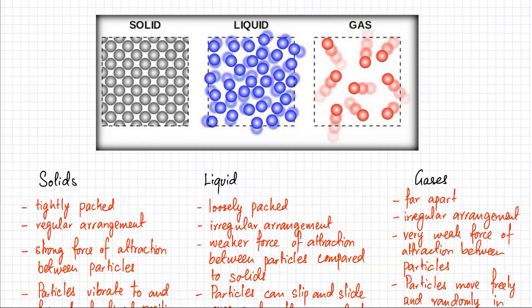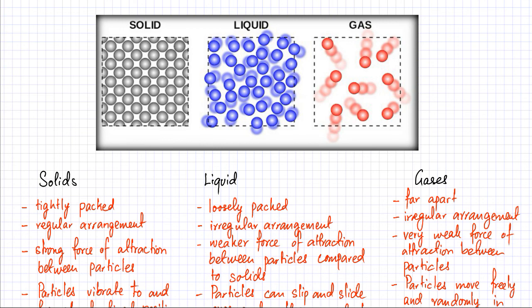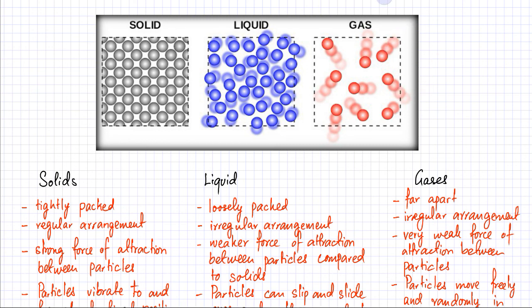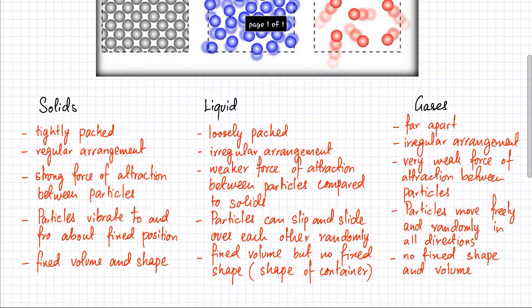Lastly, we're going to discuss gaseous state. In a gas, the particles are very energetic and freely moving in all directions. The forces of attraction can be easily overcome because the particles are extremely energetic, so they can freely move in all directions. The gaps between particles are now much greater compared to liquids and solids, and all the gas particles are just freely and randomly moving around.